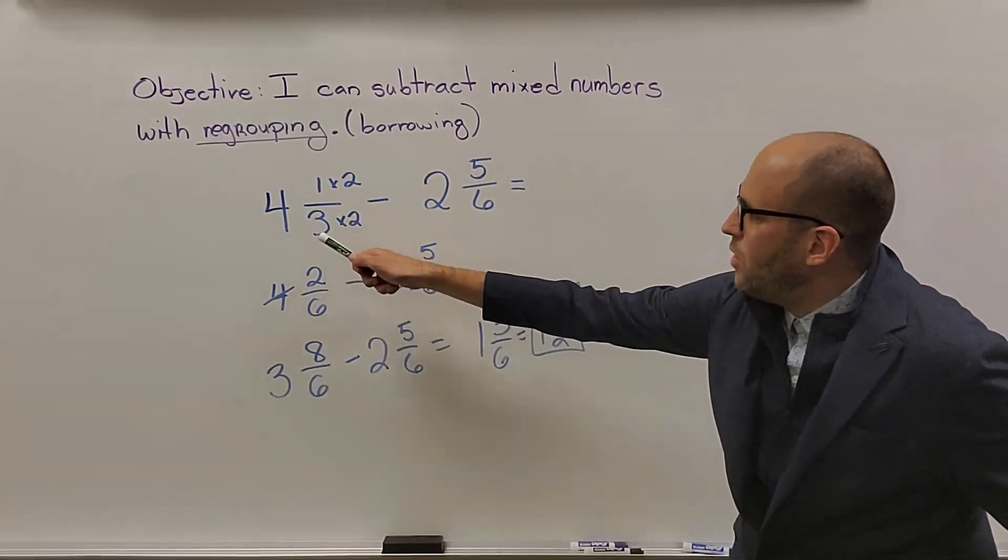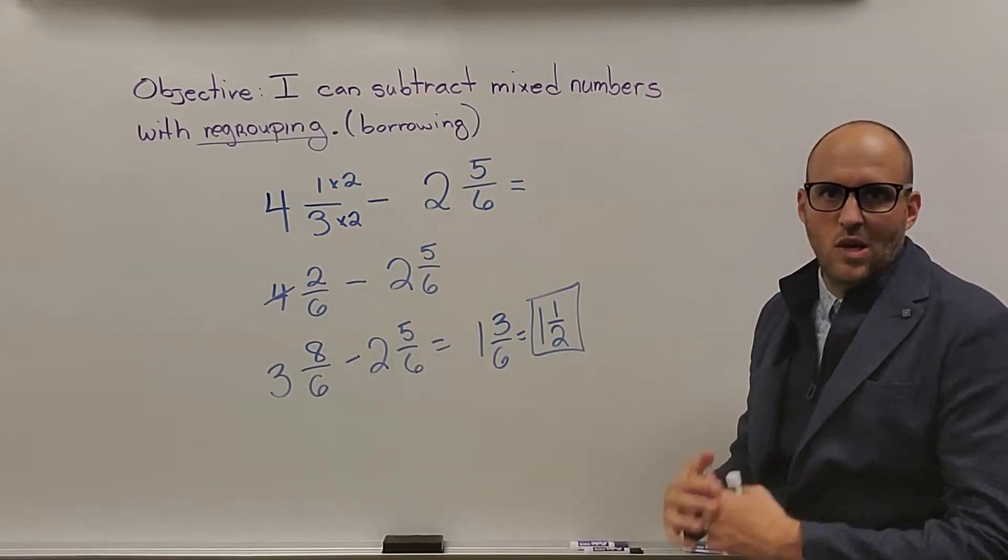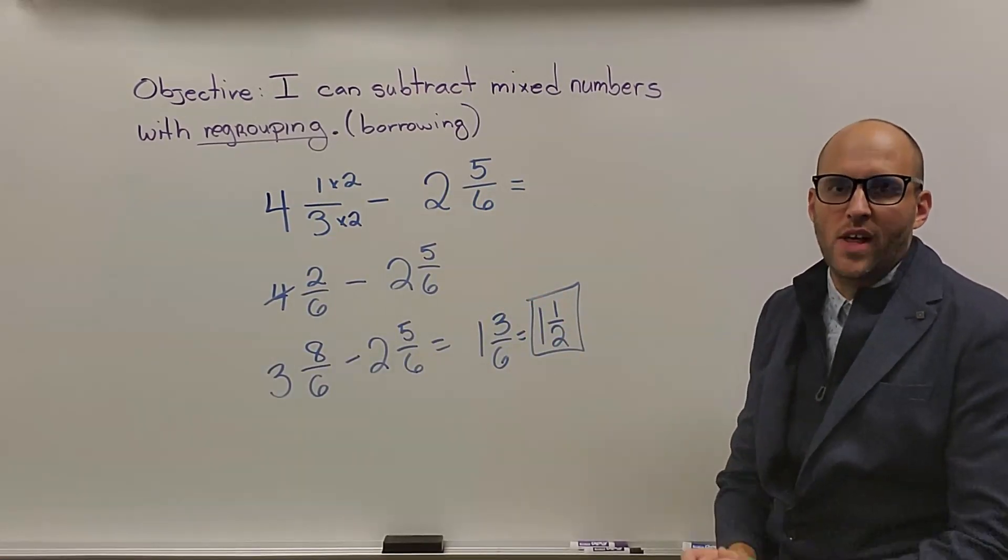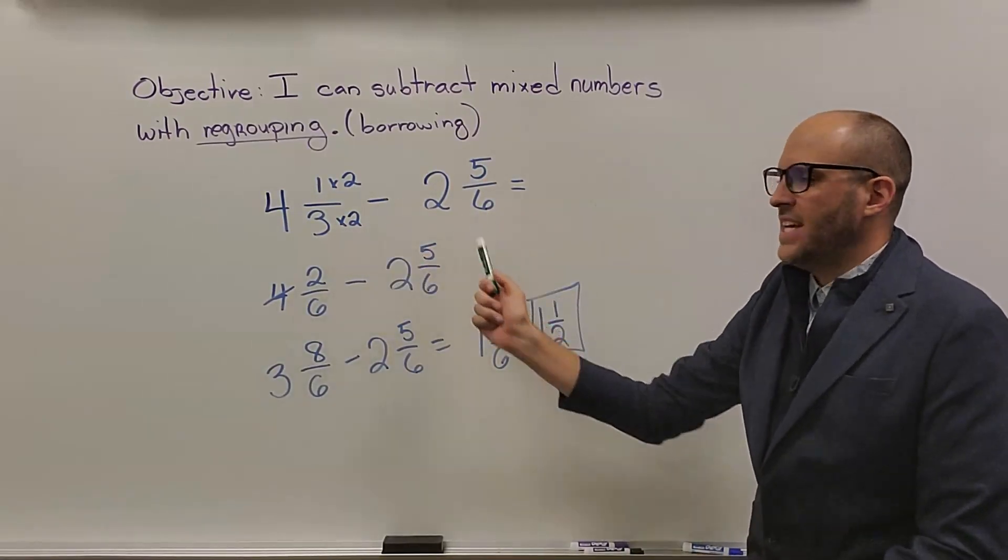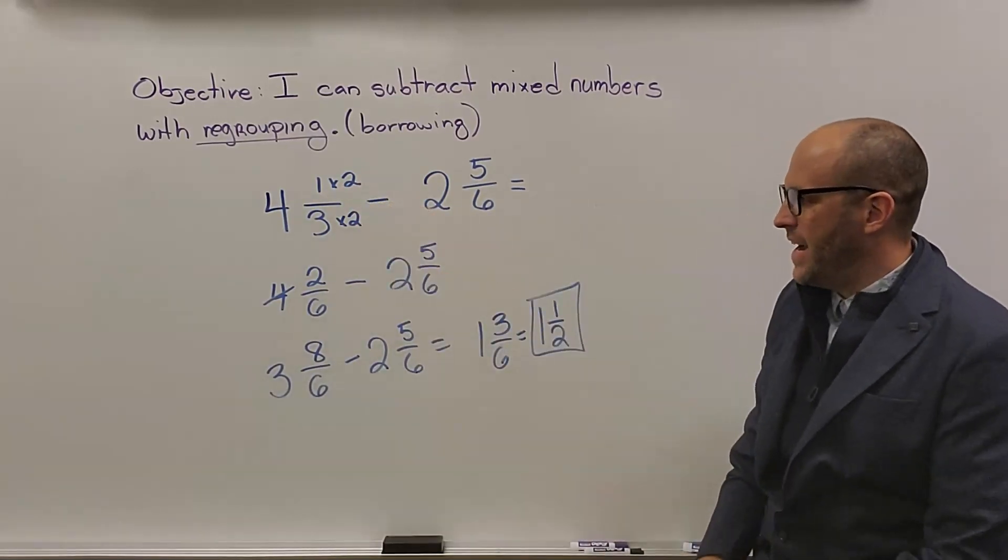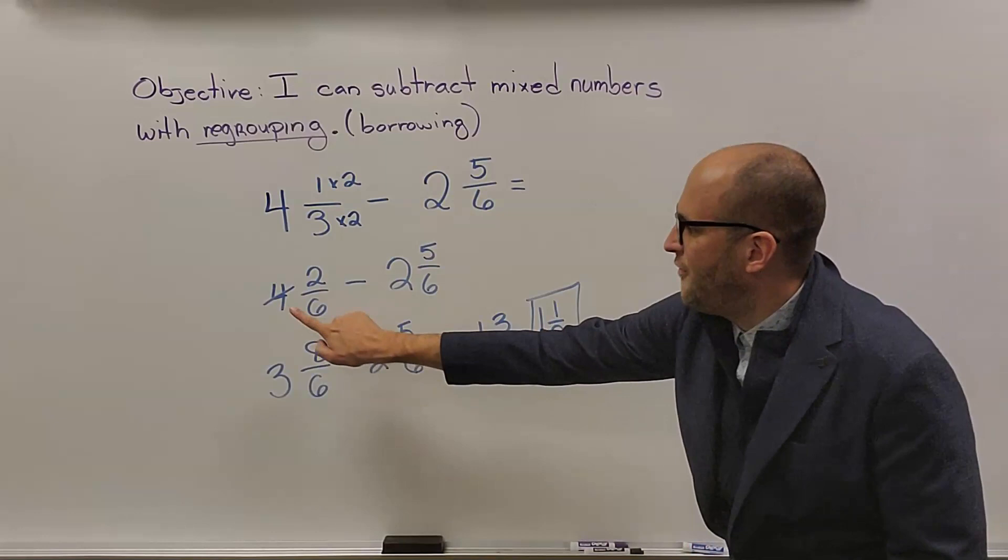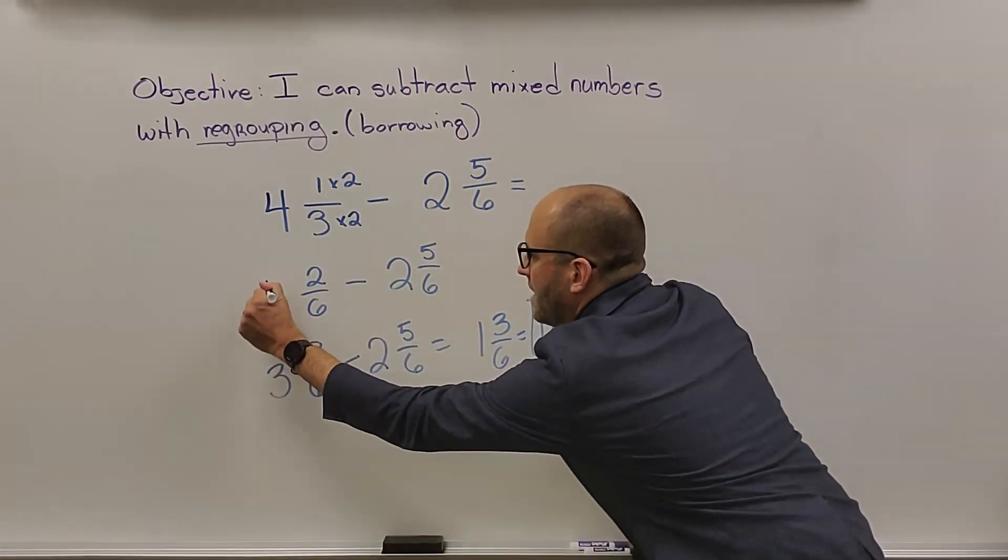So right here we have 4 and 1 third minus 2 and 5 sixths. Just like adding and subtracting, you always start with making equivalent fractions. So hopefully by now you're seeing 3 and 6 both have 6 in common, which is why I multiplied 3 by 2 in the numerator and denominator. That gets me 4 and 2 sixths minus 2 and 5 sixths.